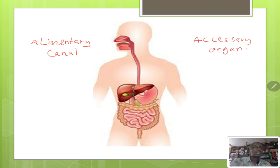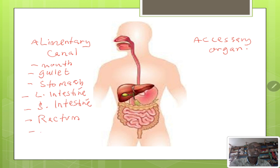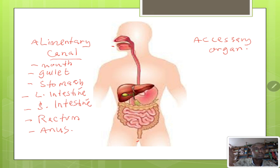The alimentary canal contains: number one, the mouth; the gullet or oesophagus; the stomach; the large intestine; the small intestine; the rectum; and the anus. These seven organs make up the alimentary part of the digestive system. As you can see from the diagram, it starts from the mouth up to the anus — so it is a long muscular tube which runs from the mouth all the way down.